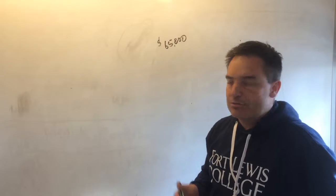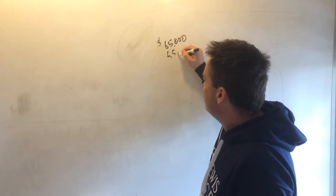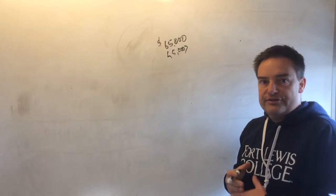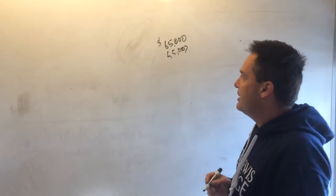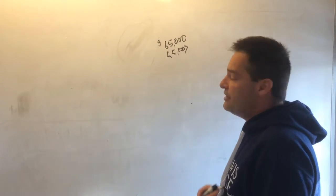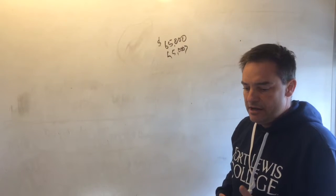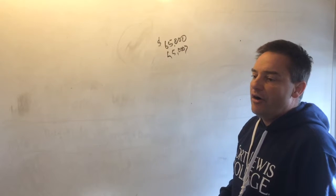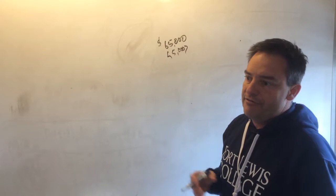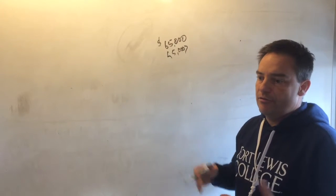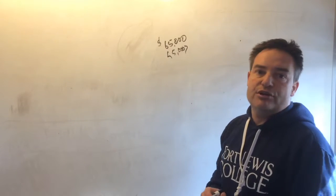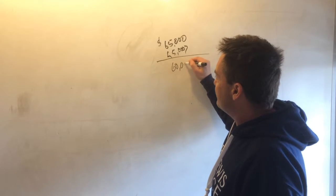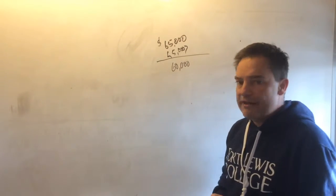From there, you subtract out the salvage value, which is just the amount that you would expect to receive once the useful life has occurred. This could be anything from the weight of the steel or iron, all the way to if it was a vehicle or forklift, what you could sell it on Craigslist when you dispose of it. So you come up with the amount to depreciate over its life.